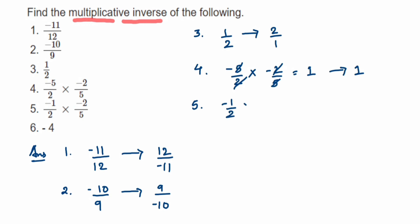For the fifth one, we have (-1/2) multiplied by (-2/5). Cancel 2 and 2 — minus times minus is positive — so we get 1/5. The reciprocal of 1/5 is 5/1, so 5/1 is the multiplicative inverse of this entire expression.